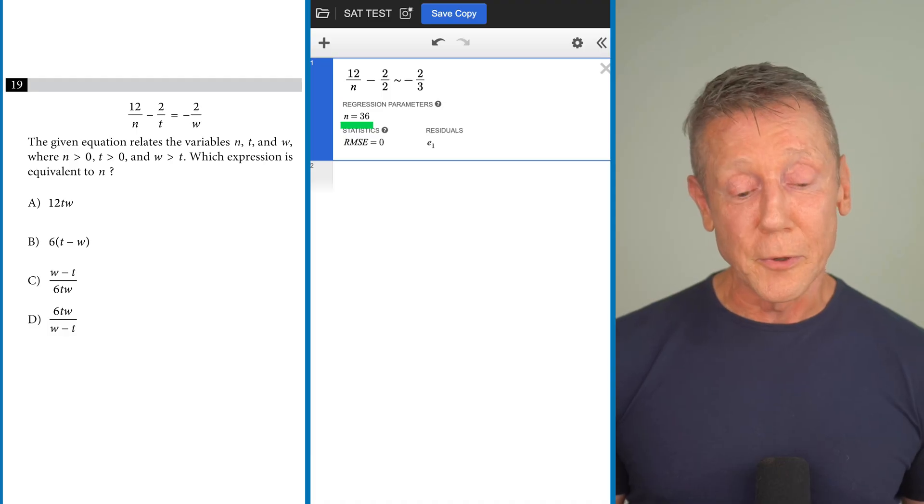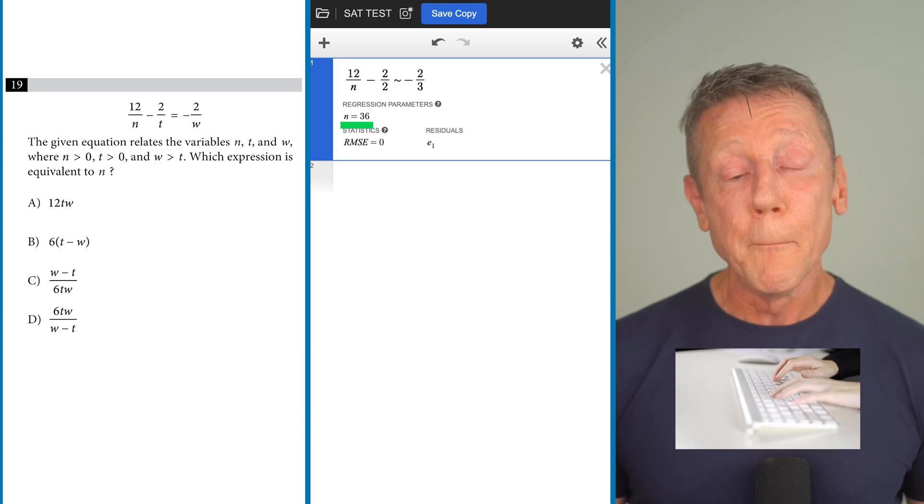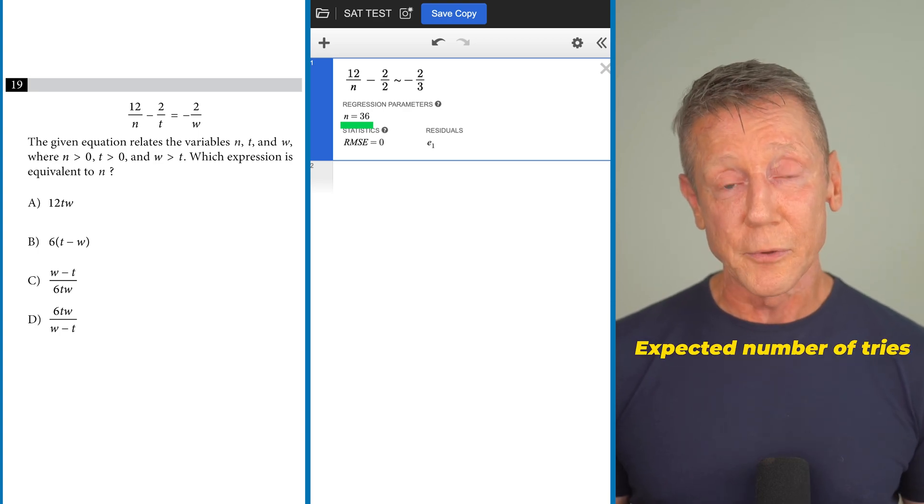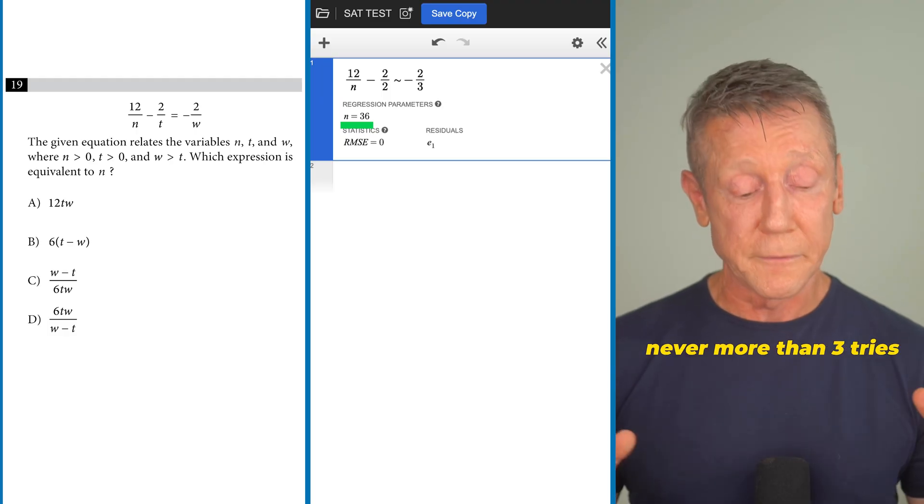The next step is to evaluate the answer choice expressions using 2 and 3 to see if you get the same answer. Now I know this may look like a lot of typing but the expected number of trials to get the right answer is 2.25 and you'll never need to type more than 3 because if the first 3 don't work the fourth one is the right answer.